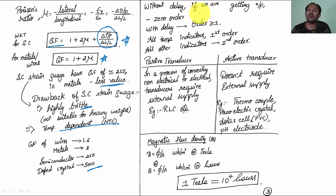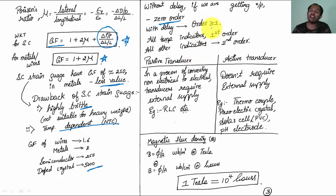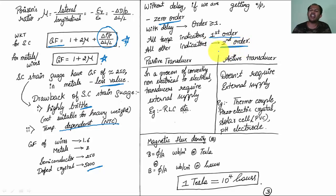If you are getting output without any delay, it is a zero-order system — it has no inductors or capacitors. If there is a delay, the order will be greater than or equal to 1. All temperature indicators are first-order systems. All other indicators are second-order systems. This is very important, and for engineering service examinations, assertion and reasoning questions will be based on this topic.